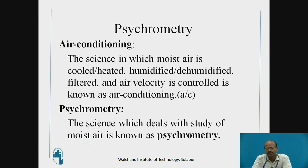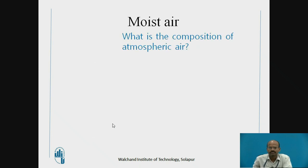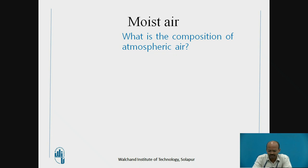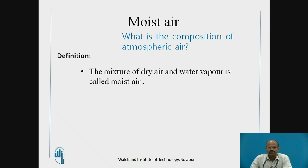In air conditioning, air is treated, and psychrometry plays an important role, because the science which deals with the study of moist air is known as psychrometry. Moist air in air conditioning is very important. The atmospheric air is treated and its properties are changed by the air conditioner. You must know the composition of atmospheric air. The mixture of dry air and water vapor is known as moist air.